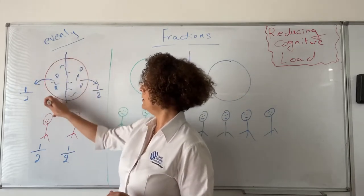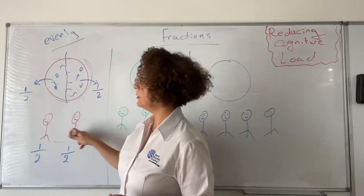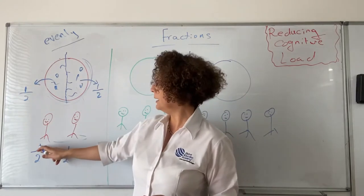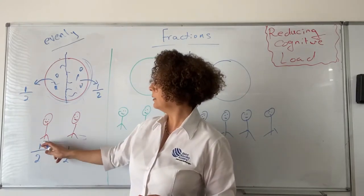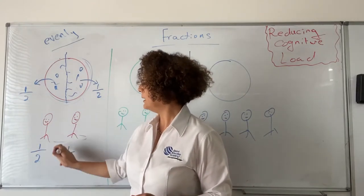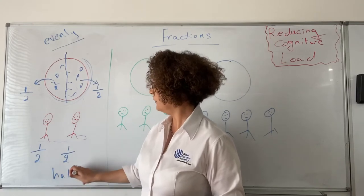So one pizza shared between two people — each one will get one out of two. That is what we call half.